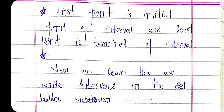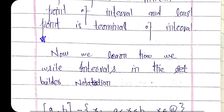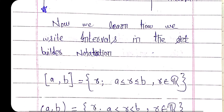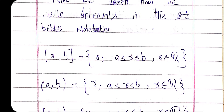The first point is the initial point, and the last point is the terminal point, as already explained. Now we learn about the set-builder notation of the intervals. For a closed interval from a to b, where a is the initial point and b is the terminal point, the elements present in the closed interval are real numbers r such that r is greater than or equal to a and less than or equal to b. We use greater than or equal to because the boundary points are included.